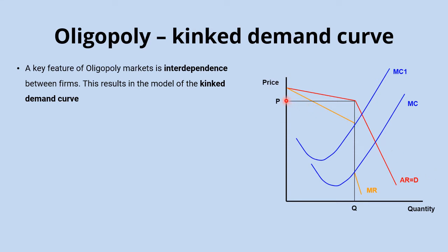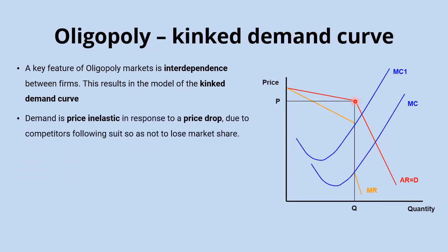With the kinked demand curve, the oligopolist firm is initially charging price P, and the demand curve — the average revenue curve — kinks around that price point. There's a more shallow curve above for price increases and a steeper curve below for price decreases. When the oligopolist tries to decrease prices, rivals don't want to lose market share, so they all cut their prices as well.